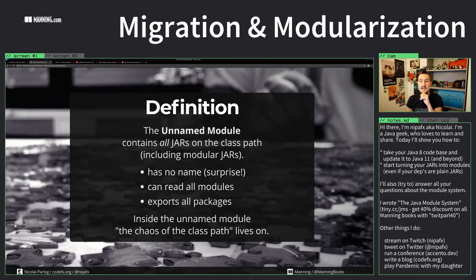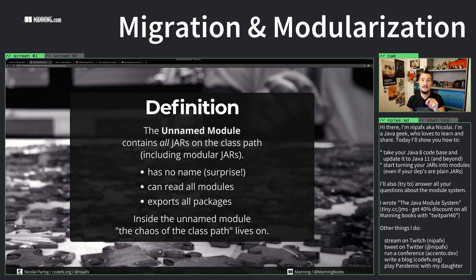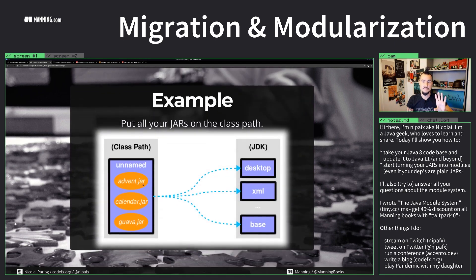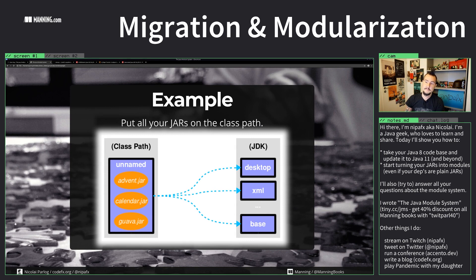Let's start with the unnamed module and why the class path just works. The unnamed module is what the module system creates for the entire class path content — everything gets stuffed into the unnamed module. It has no name, it can read all modules, it can export all packages, and within it the chaos of the class path lives on.